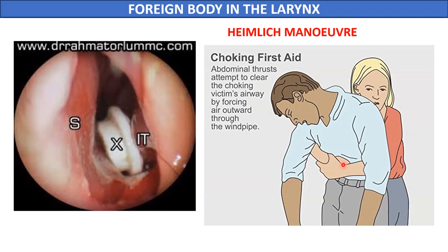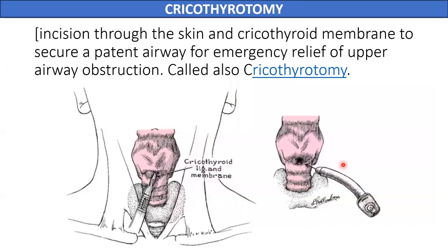If the Heimlich manoeuvre fails, one may have to make an incision in the cricothyroid membrane to maintain patent airways. This procedure is known as cricothyroidotomy.